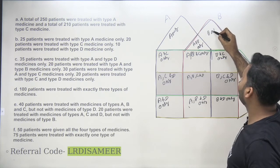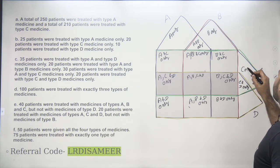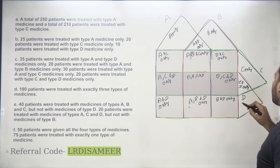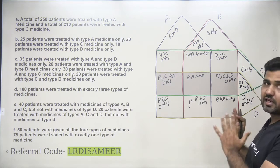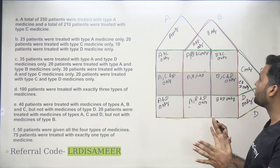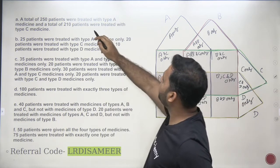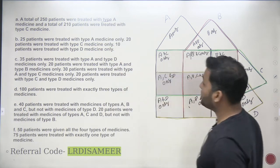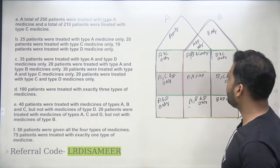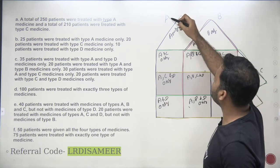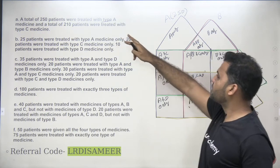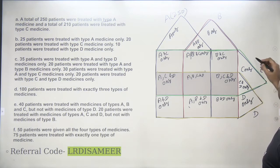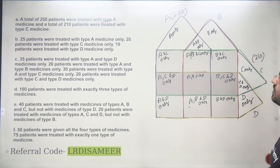This is B only, this is C only, and this is D only. All you have to do now is put the values in the diagram and you will be able to solve the set. A total of 250 patients were treated with type A — so this complete region is 250. And 210 patients were treated with type C medicine — so this entire green region is 210.